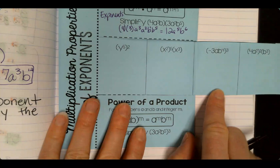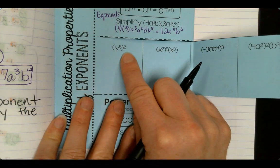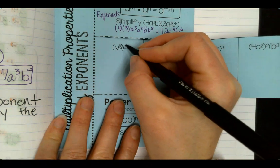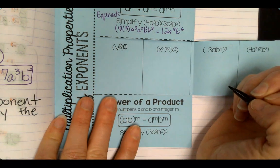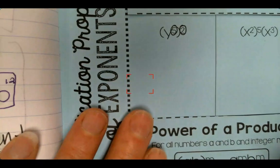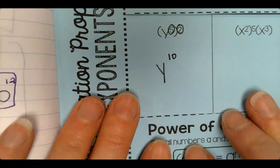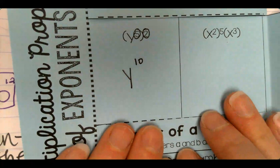Let's do the ones inside. Y to the 5th squared. The exponents, we're going to multiply them. 5th power and a squared. Multiply them. You get a 10. So on these, we don't have to show any work. We're just going to multiply our exponents.